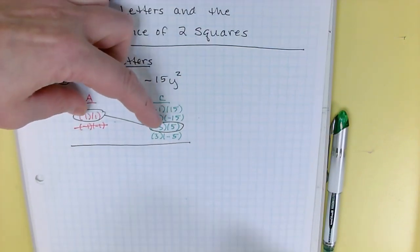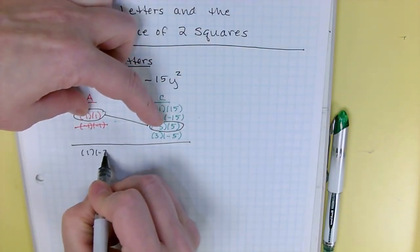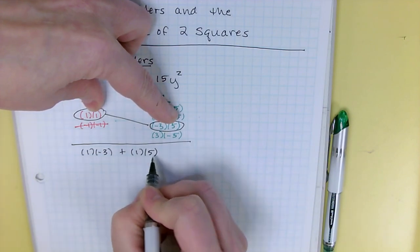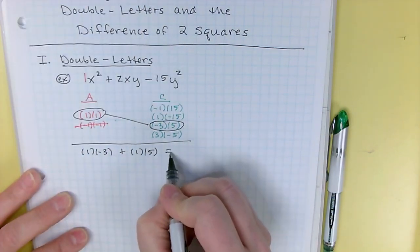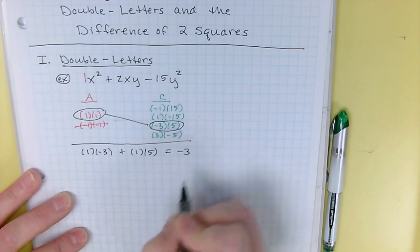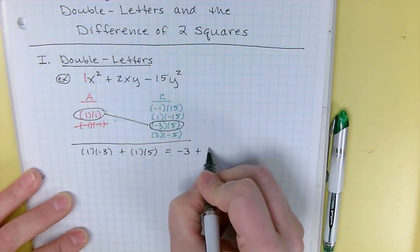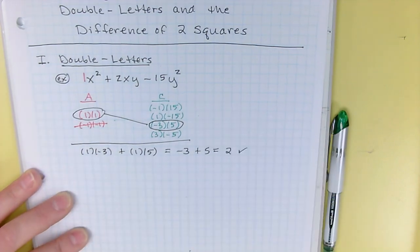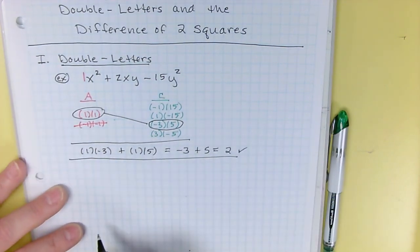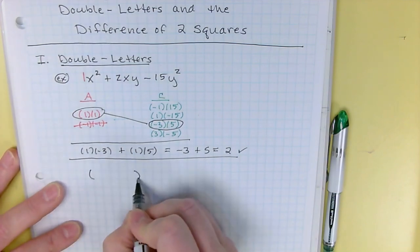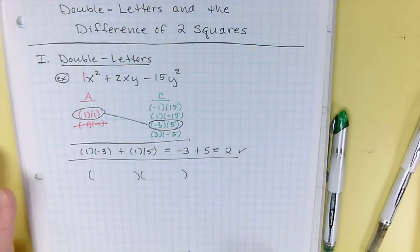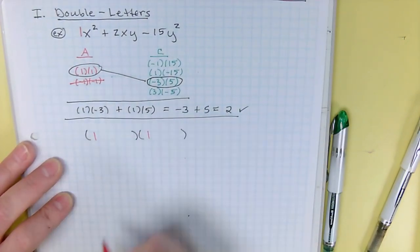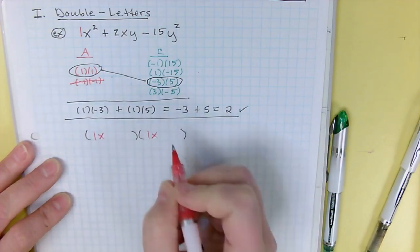Firsts and seconds: we're going to multiply 1 times negative 3 — that's the firsts — plus the seconds, 1 times 5. So 1 times negative 3 is negative 3, 1 times 5 is 5, and 5 minus 3 is 2, which is our b value. That's what we want, so we have the right factor pairs. Draw your two pairs of parentheses, and then put your a's in the first position — so 1 and 1 — and split the x's: x and x.